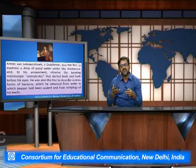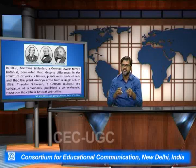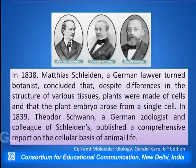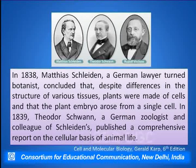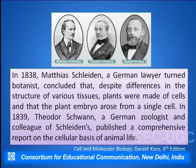For the first time, he watched bacterial cells under the microscopes. In the year 1838, Schleiden, a German botanist, concluded that despite differences in structure of the various tissues, plants were made of cells, and the plant embryo arose from a single cell. For the first time, in the year 1838, he could put forward this particular hypothesis.